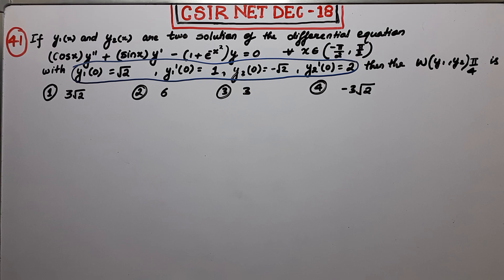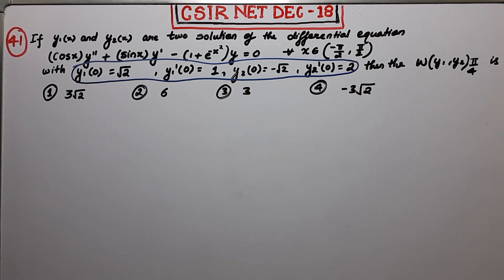What we have to do is find the Wronskian of y1 and y2 at π/4. Before beginning with the question, I will provide a note regarding how to find the Wronskian for some particular type of differential equation.